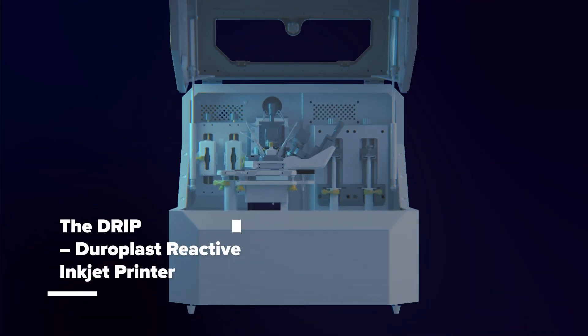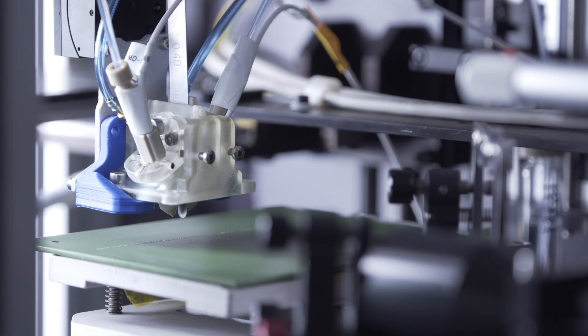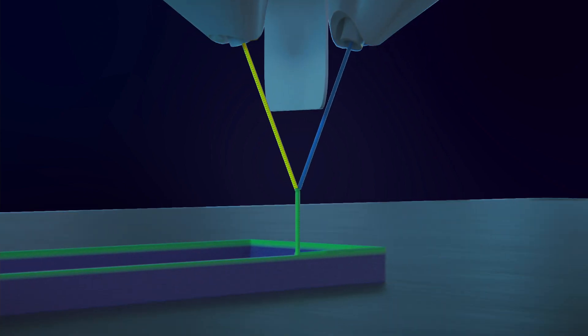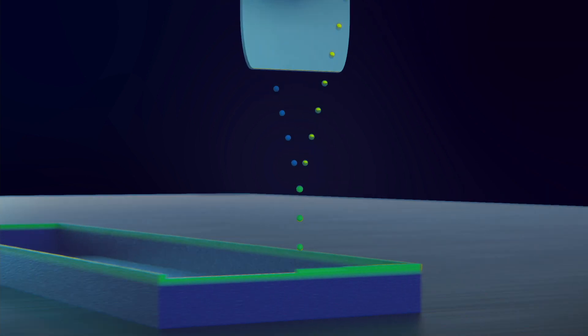The DRIP Duroplast Reactive Inkjet Printer. DRIP produces materials during print by contacting inks which react rapidly at the very moment of contact.